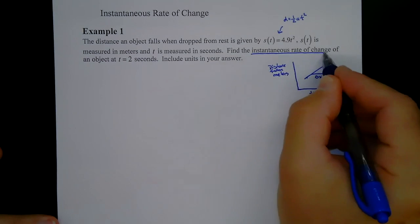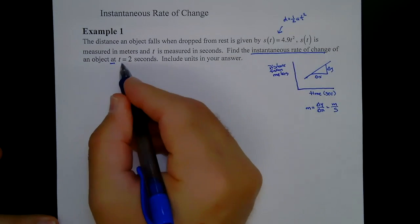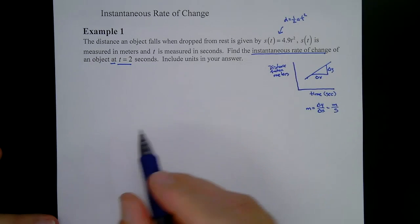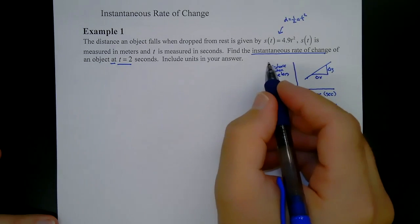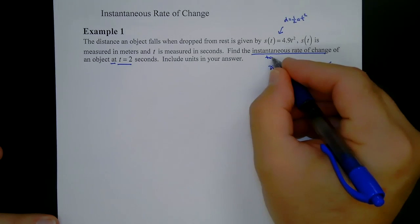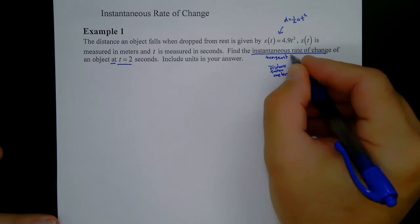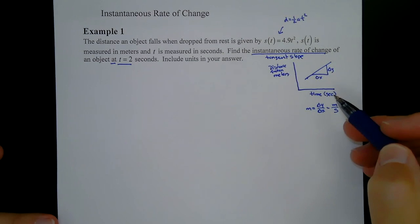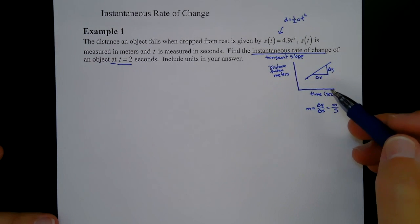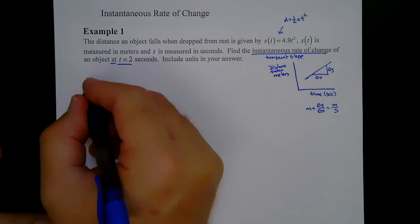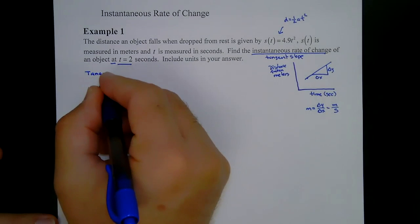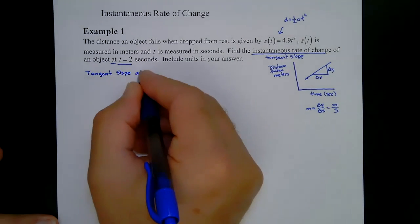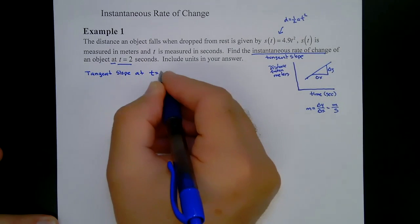Let's find the instantaneous rate of change of an object at t = 2, and we want to include units in our answer. Instantaneous rate of change means tangent slope. Average rate of change is between two points; instantaneous rate of change is at one point, and we want to find that tangent slope at t = 2.